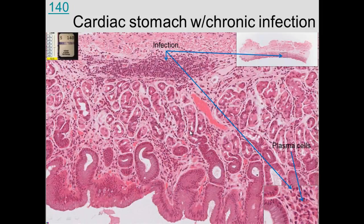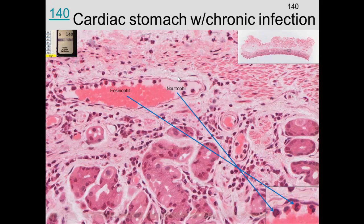Here is a piece of stomach with a chronic infection. You can see many white blood cells with dark nuclei, plasma cells, parietal cells, and chief cells. There is a venule showing margination — neutrophils and eosinophils are located and visible along the vessel wall, marginating in response to the infection.